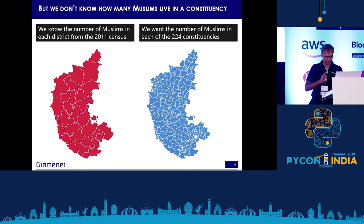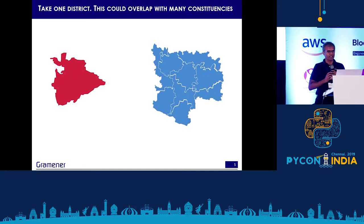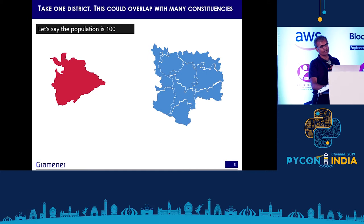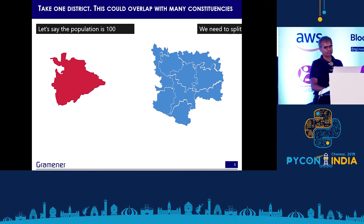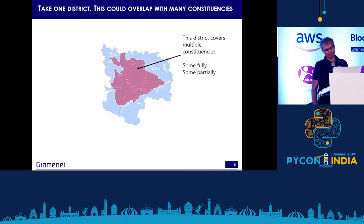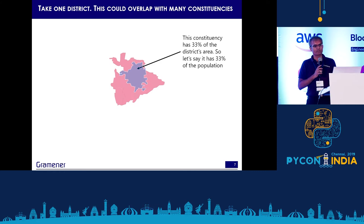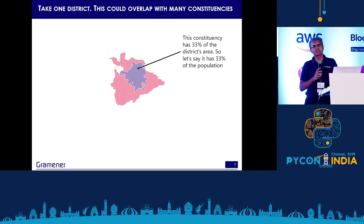So how do we solve this problem? The logical way is to take one district and a constituency or set of constituencies. Let's say the district has a population of 100, out of which 13% are Muslims, and we want to split it evenly across a bunch of constituencies. We could just overlay them — one district could cover multiple constituencies, one constituency could cover multiple districts, and there is a many-to-many mapping between these, sometimes full coverage, sometimes partial. So this district, for instance, covers at least one constituency fully — maybe about one-third of the total area. I can say approximately one-third of that district's population lives in this constituency.